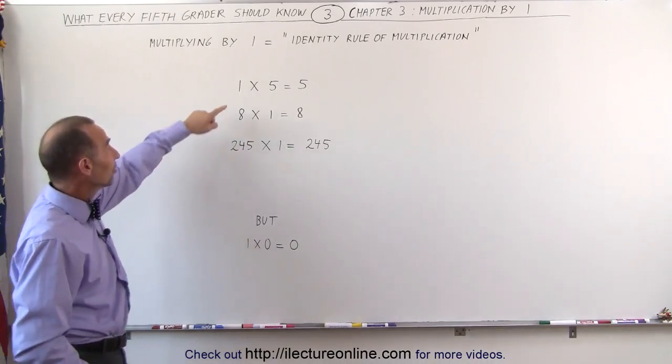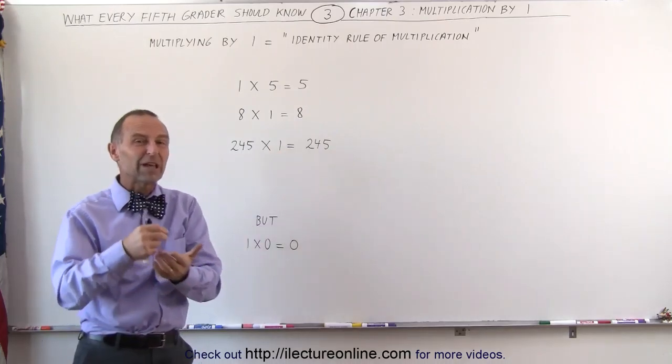For example, if you say 1 times 5, that is equal to 5. That means you only have 1 of them.